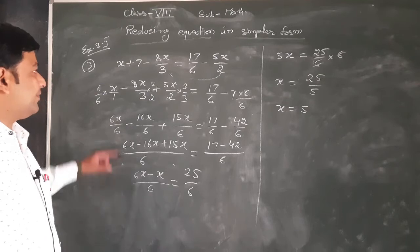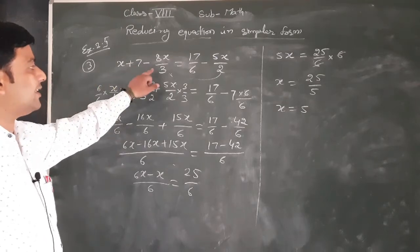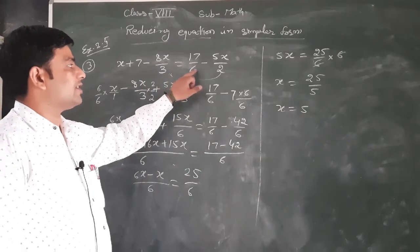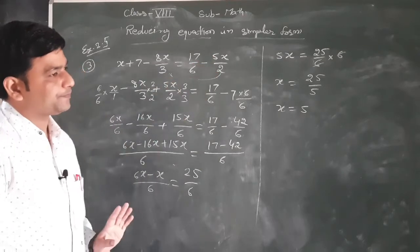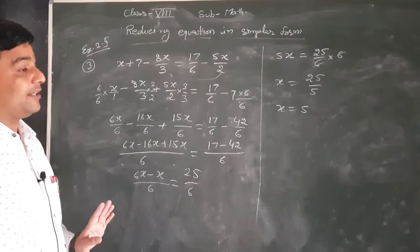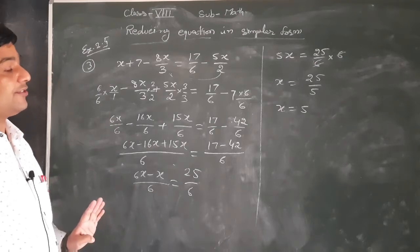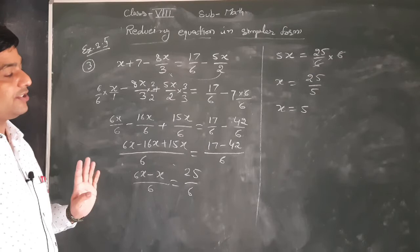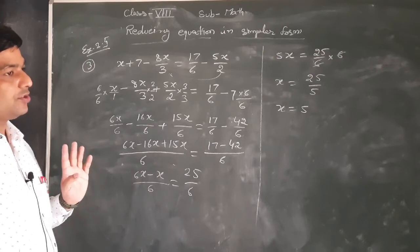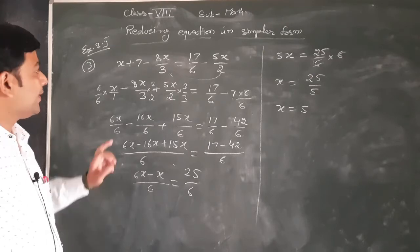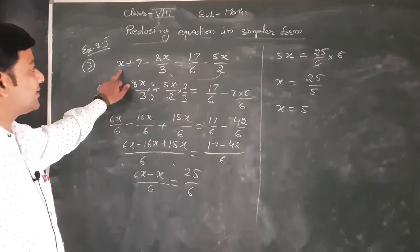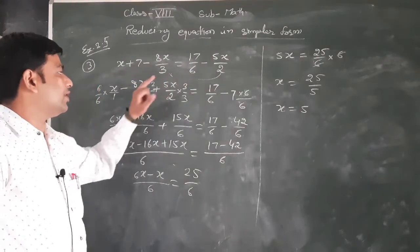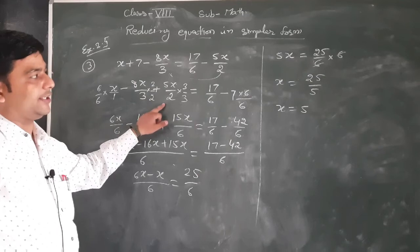Question number 3 में: x + 7 - 8x/3 = 17/6 - 5x/2 दिया हुआ है। जैसा मैंने पहले बताया था, जब भी किसी equation को solve करते हैं तो variables को one side में रखते हैं और constant terms को another side पर। यहाँ x - 8x/3 variables हैं, और minus 5x/2 को plus 5x/2 में convert किया जाएगा।